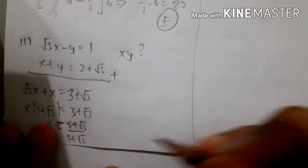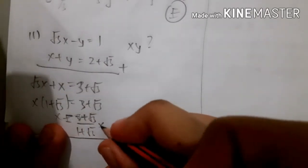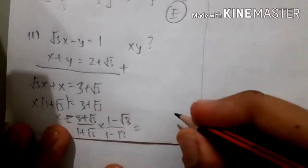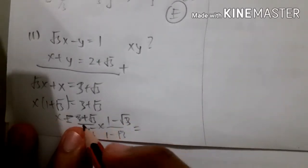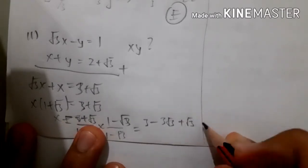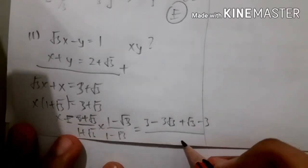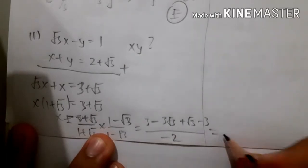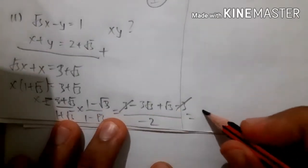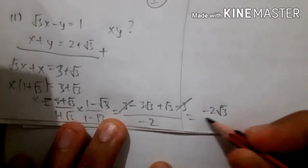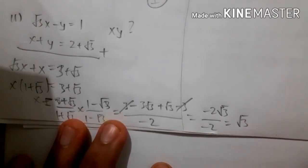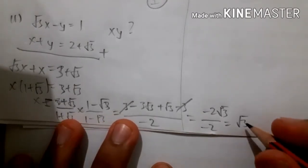Using the principle of rationalization, multiply y by (1 minus root 3) over (1 minus root 3). We calculate: 3 minus 3·root 3 plus root 3 minus 3, over 1 minus 3, which is minus 2. Crossing out gives 1 minus 2·root 3 over minus 2. The answer is x equals root 3.